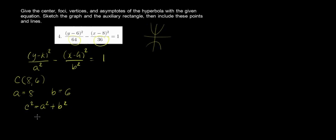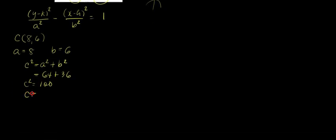Let's compute for c. a² is 8², 64, plus b², 6², that's 36. So c² equals 100. Therefore c equals plus or minus 10, but we will just get 10. Kasi distance yung pinag-usapan natin, so kailangan positive siya. So c equals 10.